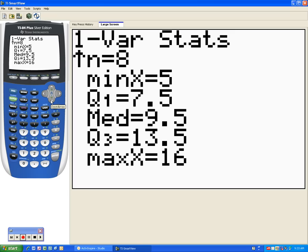Now we can see the last five numbers on the screen. We have the minimum, which is five. Q1, standing for quartile one, is 7.5. The median, 9.5. Q3, 13.5, and the maximum is 16.